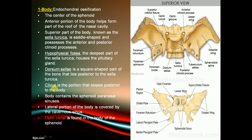The clivus slopes posteriorly to the body, which contains the sphenoid paranasal sinuses. The lateral portion of the body is covered by the cavernous sinus. The optic canal is found in the body of the sphenoid.